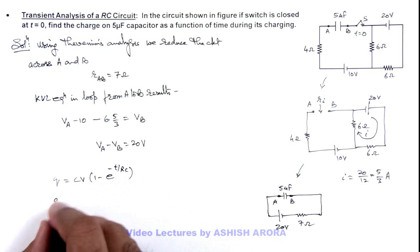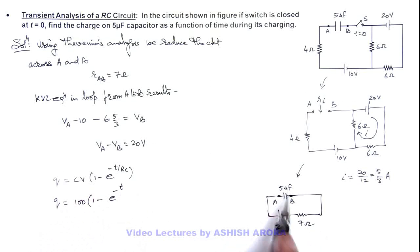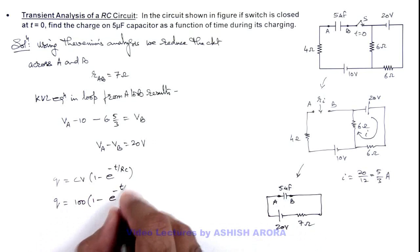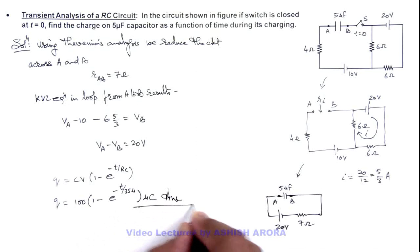So in this situation, the value of q we are getting is 5 multiplied by 20, this is 100, multiplied by (1 - e^(-t/RC)). RC will be 35 microseconds, so time we need to take in microseconds. In microcoulombs we are getting this as the result of the problem.